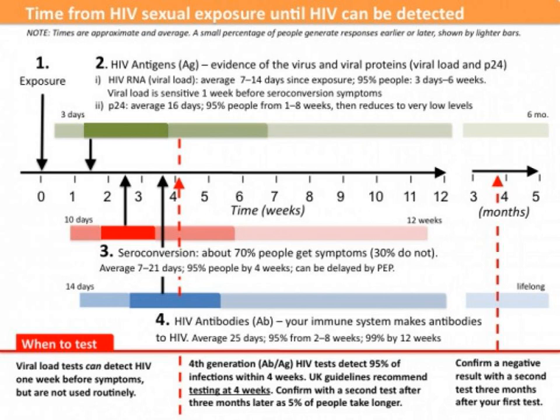Indeed, the standard guidance for those with a potential exposure to HIV is to retest at intervals up to three months to ensure they are completely free of HIV. It must be pointed out though that in most people — some 99% of the population — antibodies will normally be present in sufficient quantities to test positive at around eight weeks. Some people may test positive on an antibody test as early as 10 to 14 days post-exposure, with the average being around 25 days.